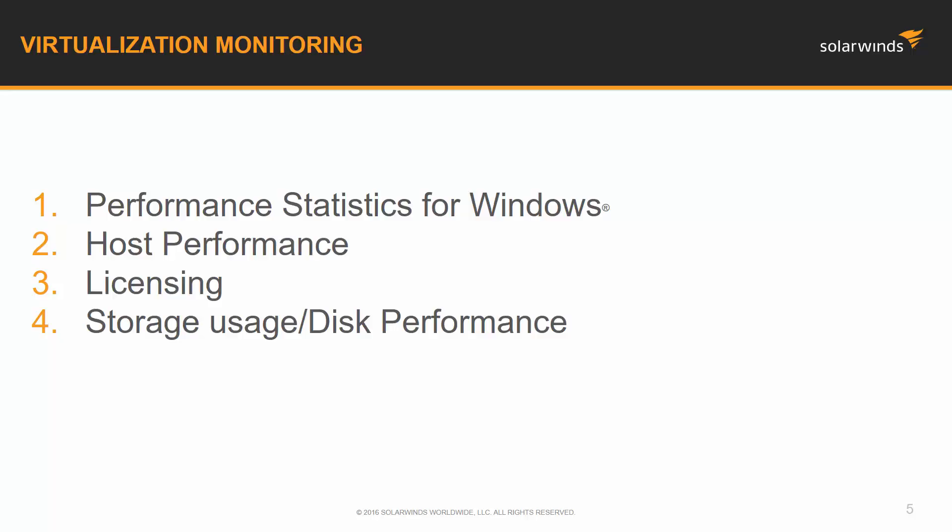Tied to that is disk performance — especially when you're talking about an application like Microsoft Exchange running on VMware or Hyper-V. Disk performance, while it's not as important as it used to be because they've rewritten Exchange, it can still degrade the performance of your application. You need to know what's going on because your users — if they're not getting what they need from a performance perspective — you're going to start getting complaints. I don't want to be the one receiving the message that things aren't functioning correctly due to disk performance or storage usage I wasn't monitoring.